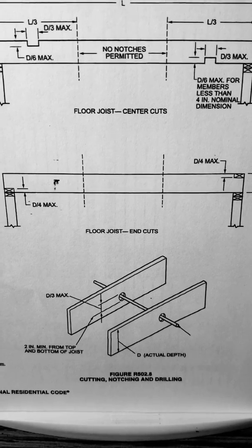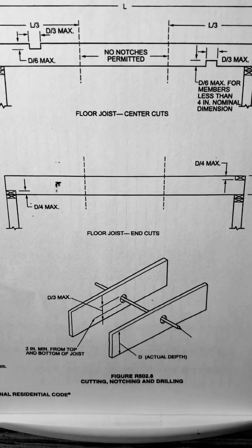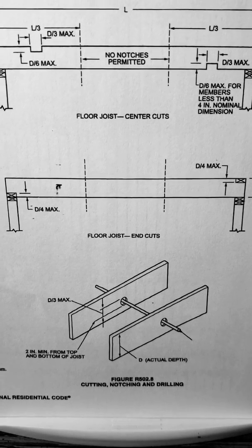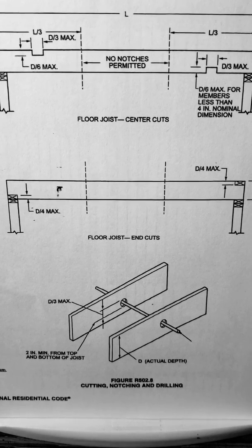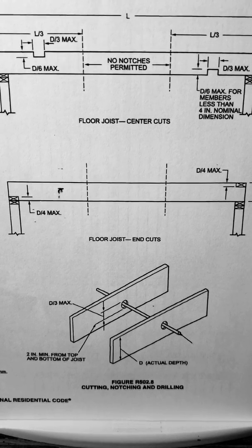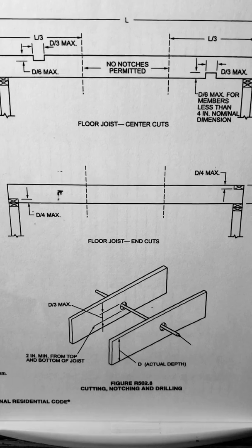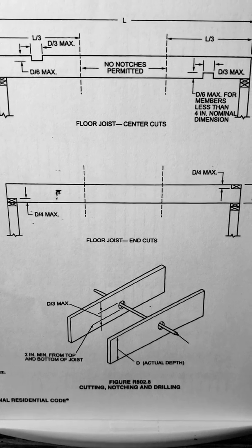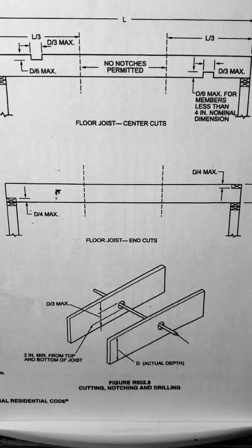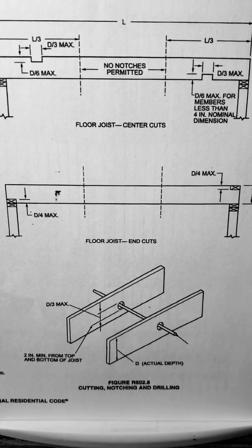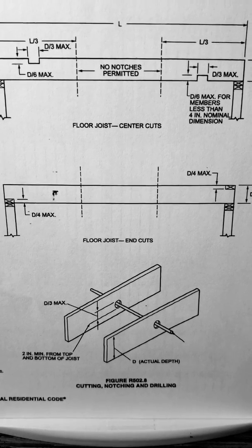Now for cutting, notching, and drilling, we get to the drilling section. 1 third is what you're allowed to drill — 1 third of the depth maximum — and then 2 inches minimum from the top and bottom of the joist.